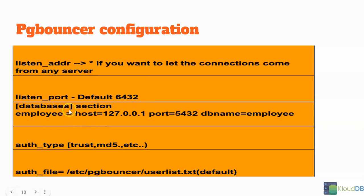This is the important databases section, where you need to give one entry per database or use some kind of wildcard for all the databases, depending on your use case. This is a pretty important part of the PG Bouncer configuration. In this example, we're giving the DB name here, the host name is localhost, the backend port, and then the DB name.